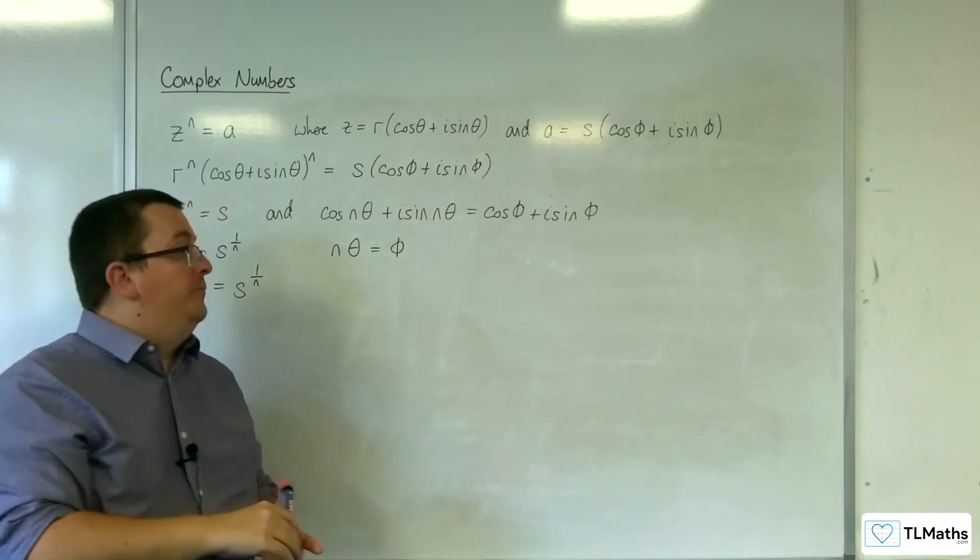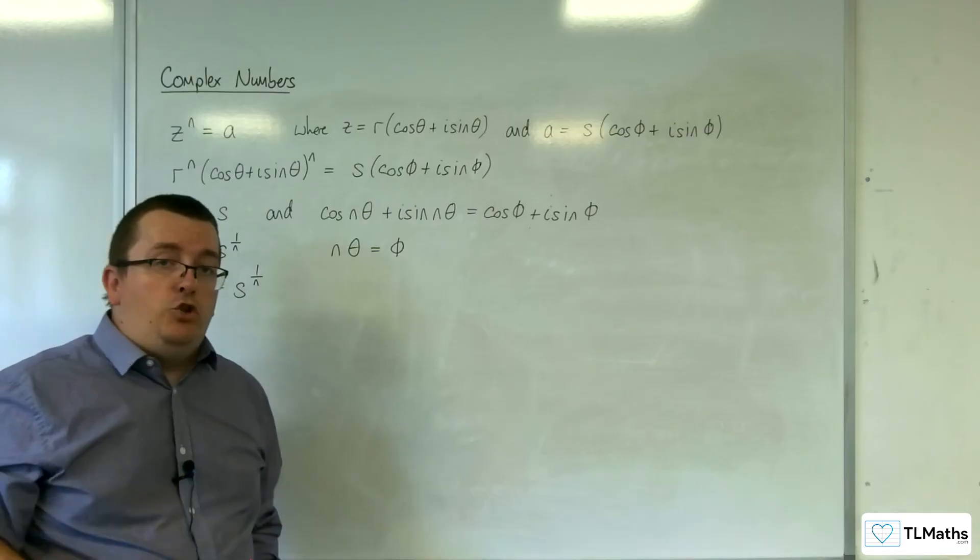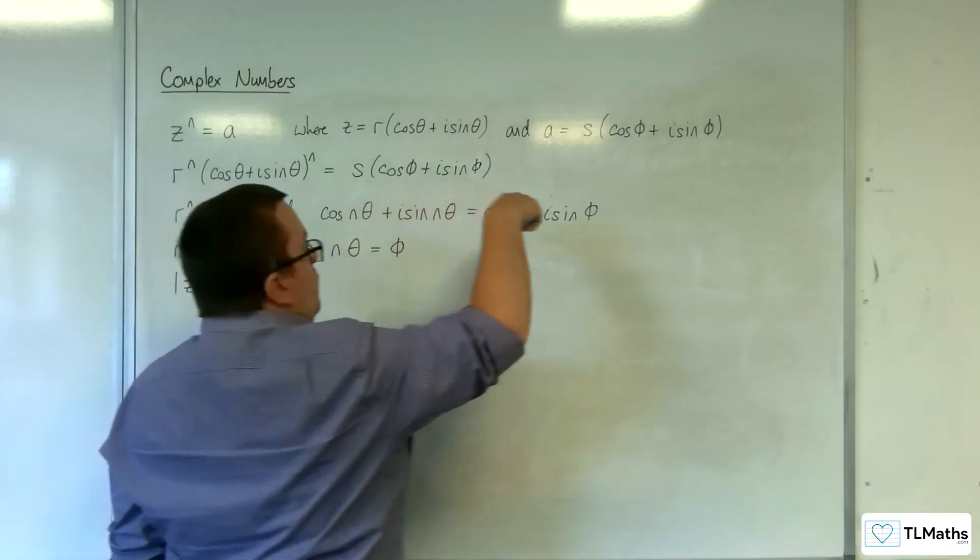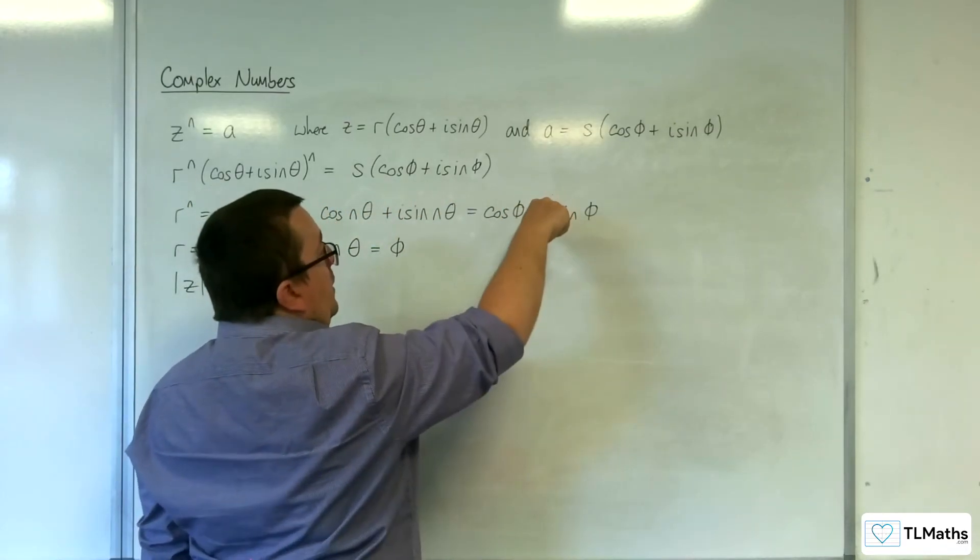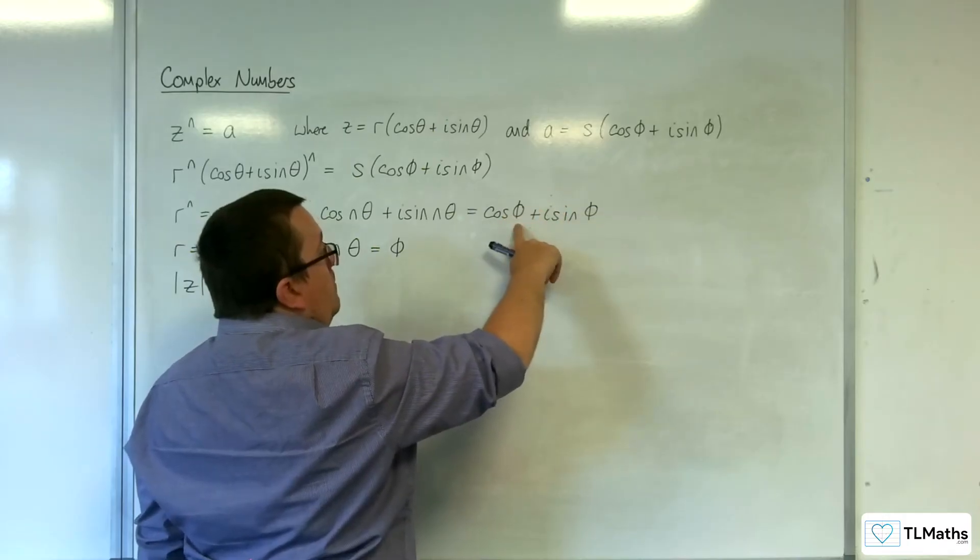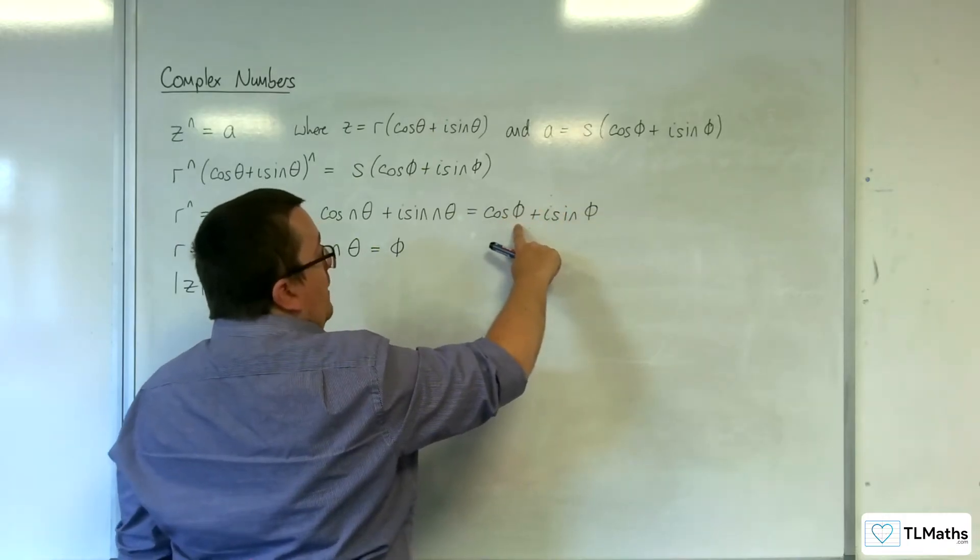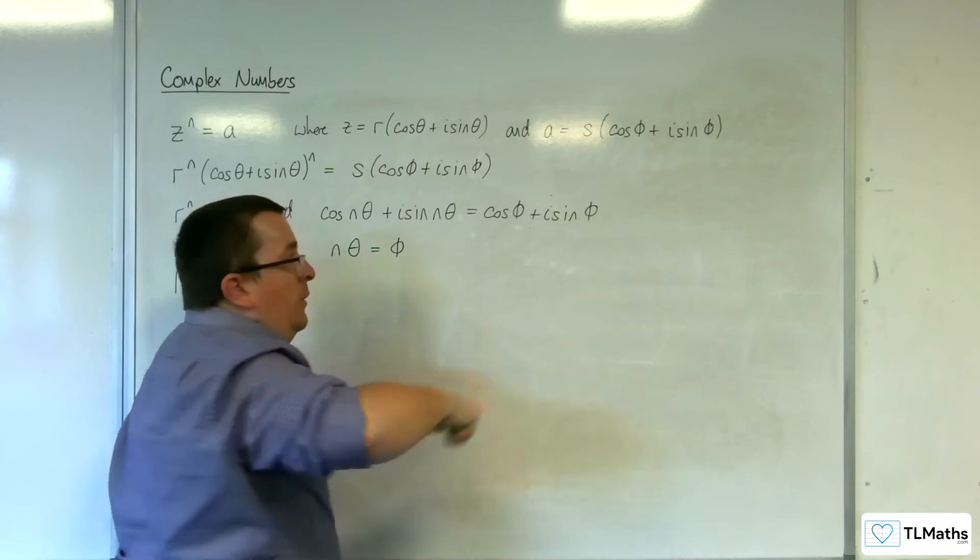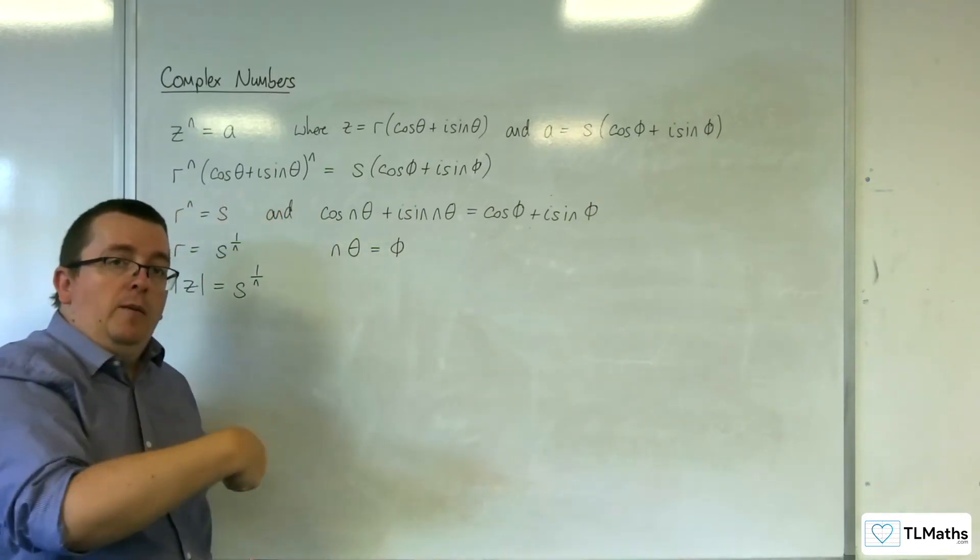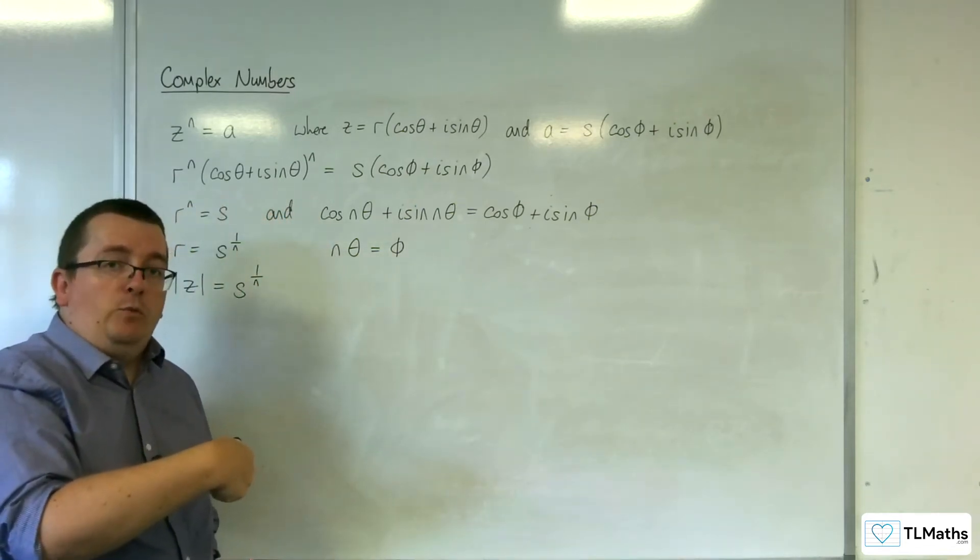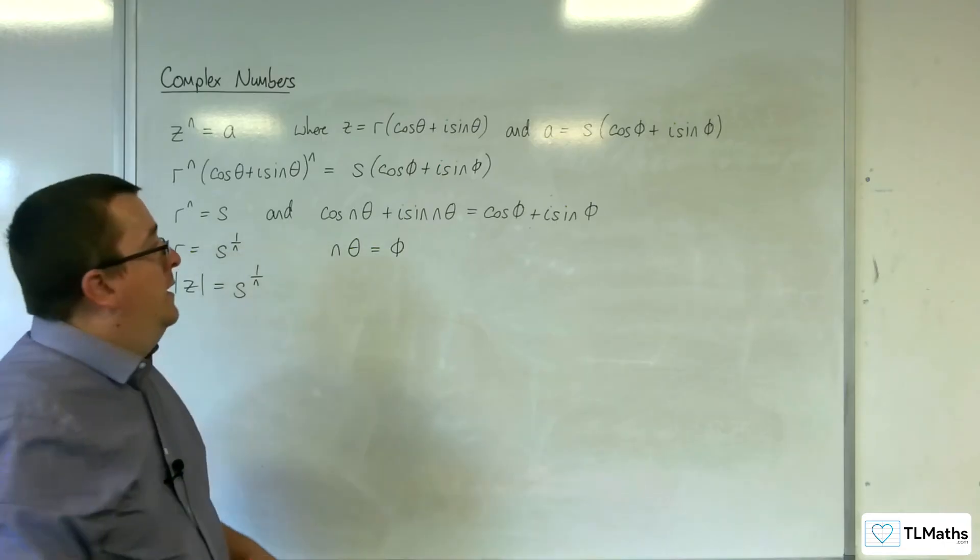Because of the cyclic nature of this, we could have this as phi, but what about phi plus 2 pi? Because if you just rotate it round by 2 pi, then you get back to where you started. The argument's still going to be the same.